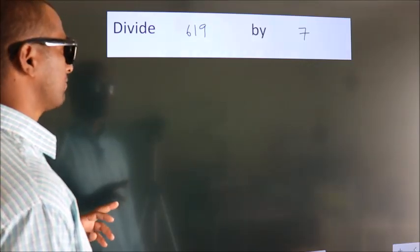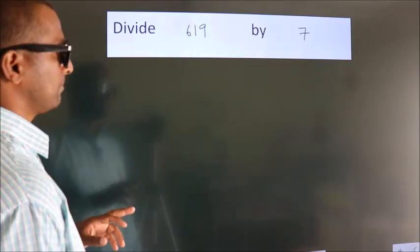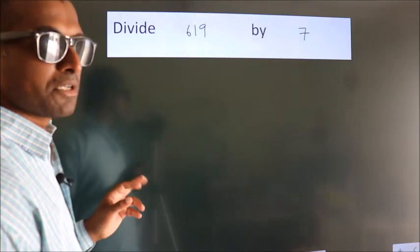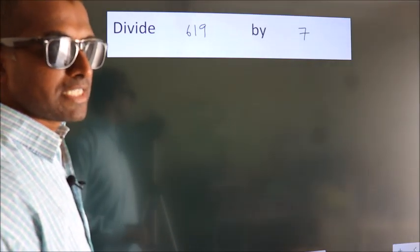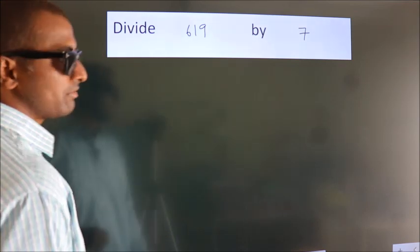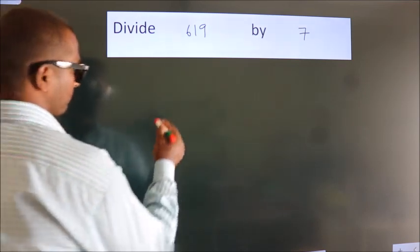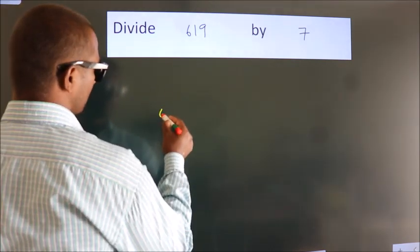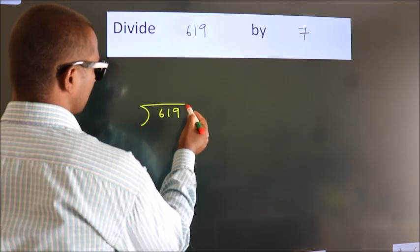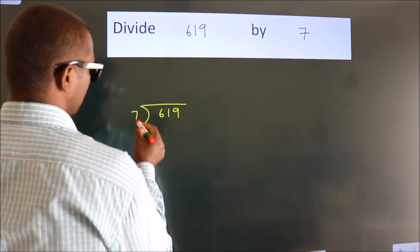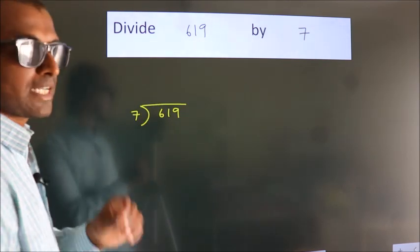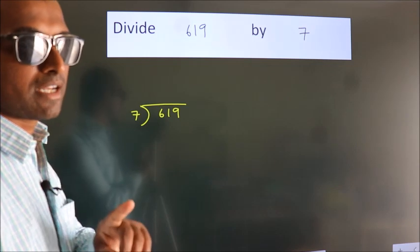Divide 619 by 7. To do this division, we should frame it in this way: 619 here, 7 here. This is your step 1.